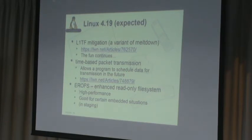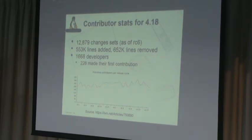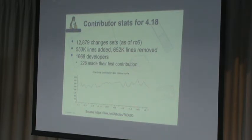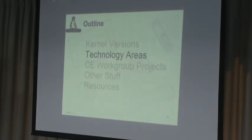In terms of 4.19 contributor stats: about 12,879 changesets, roughly 500,000 lines added and 650,000 lines removed. Of 1,600 developers, 226 made their first contribution. First-time contributors oscillate between 200 and 300 per release, which is a healthy sign that the community continues to grow.